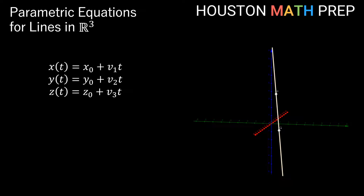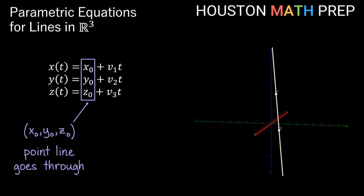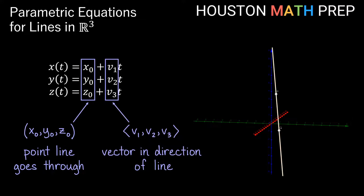You can see each equation has a constant term and a linear t term. An easy way to read and write these parametric equations is to first notice all of the constant terms together in your set of equations — together these represent some point in space that the line goes through. A line through one point could be going in any direction, so we also need to know which direction it's traveling. Looking at the linear t terms, these coefficients tell us a vector that points in the same direction as the line in 3D space.